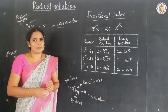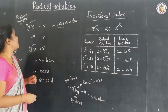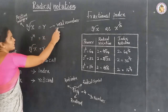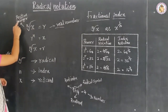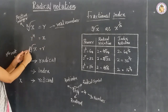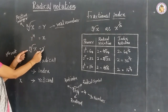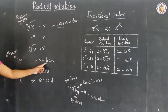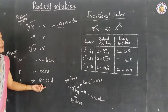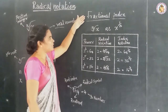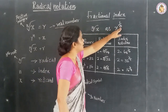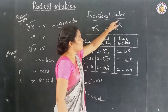Hi students, today we are going to learn about radical notation. Radical notation is: the nth root of x is equal to r, where r is the real number and n is the positive integer, and r to the power of n is equal to x. The nth root is called the radical, n is called the index, and x is called the radicand. When written in fractional index form, the nth root of x equals x to the power of 1 by n.